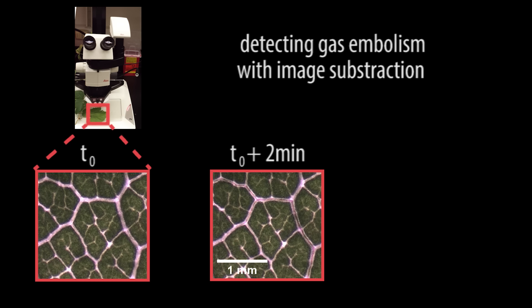By closely observing the leaf veins and detecting small changes in light transmission, we were able to detect the appearance of embolism.